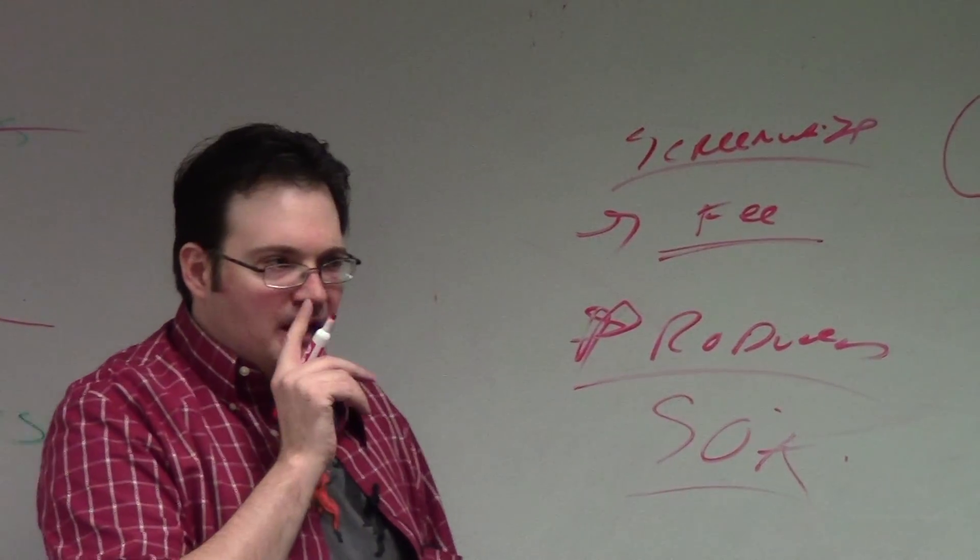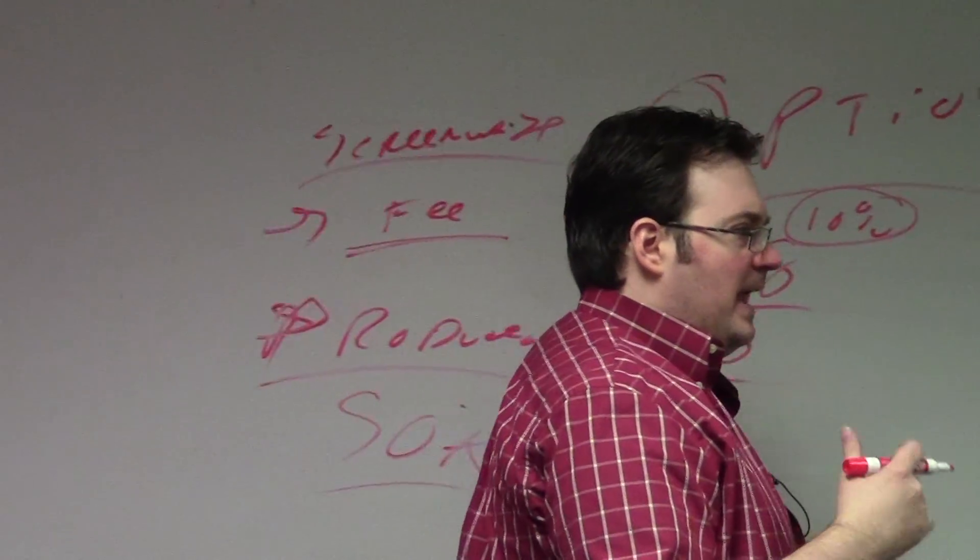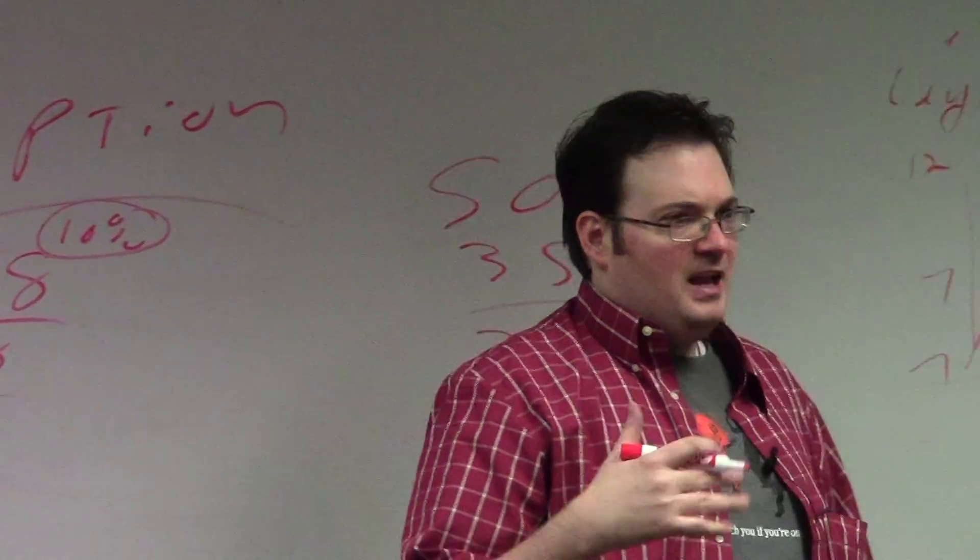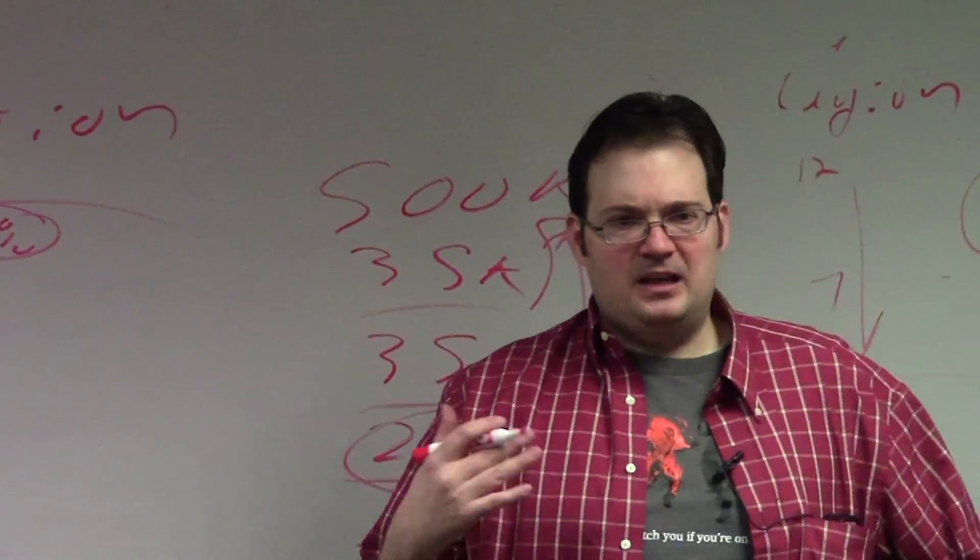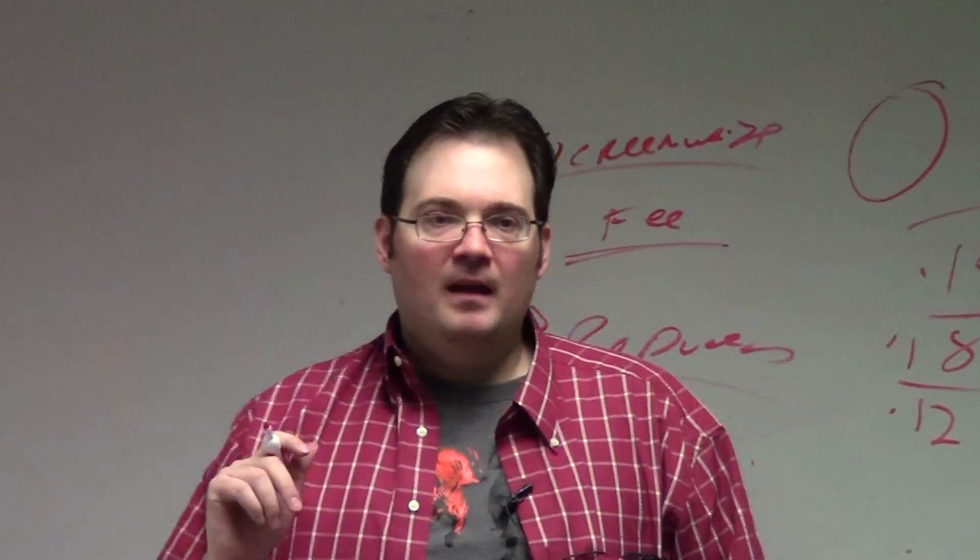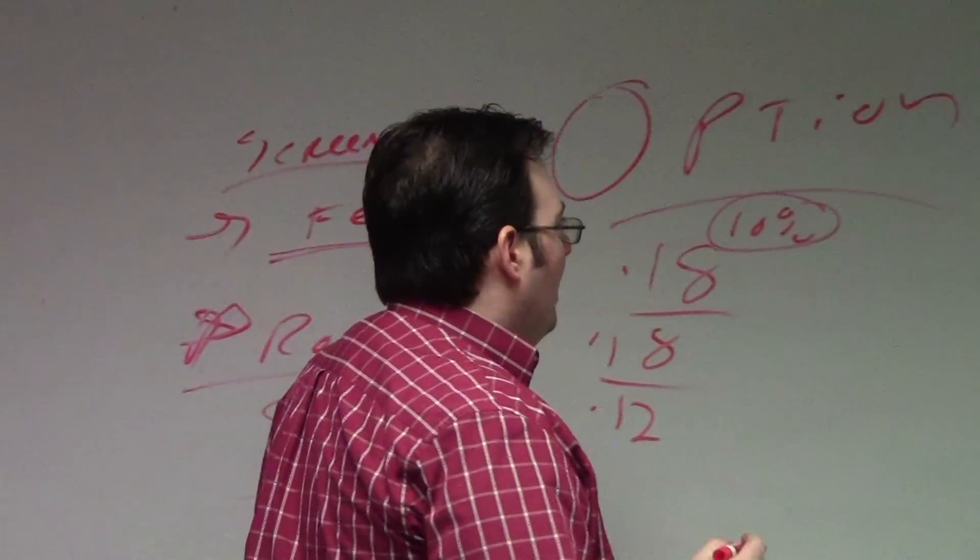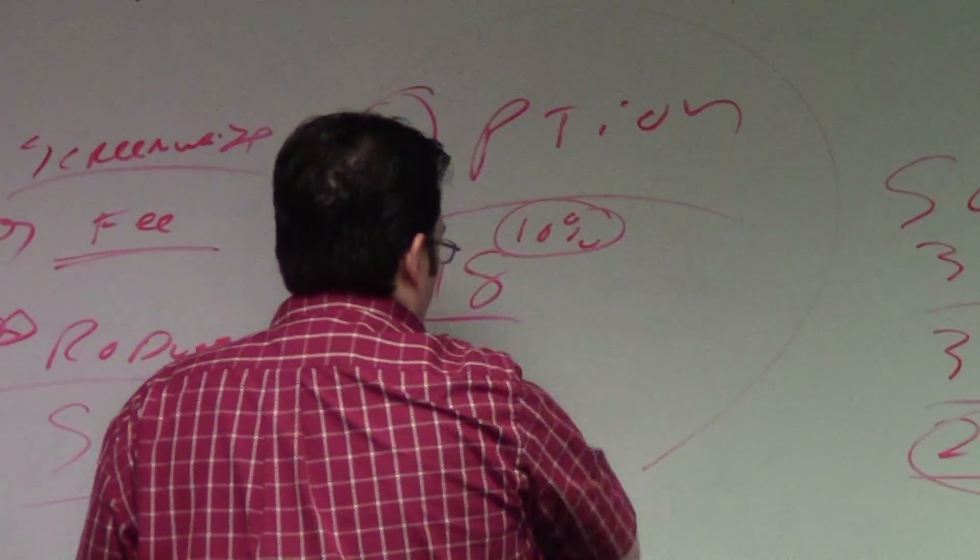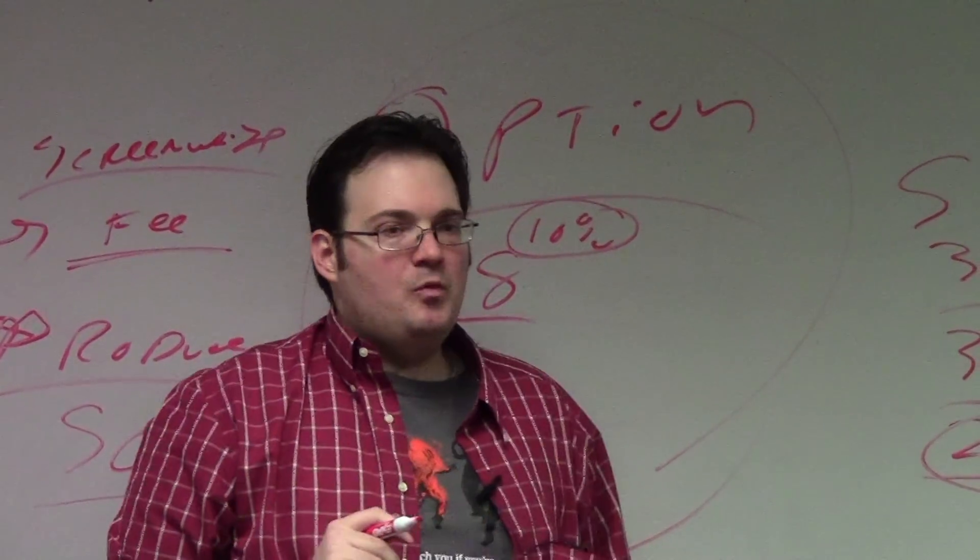The idea is they kind of own the rights, but they kind of don't. They're optioning them. You can't sell them to anyone else. They have this time to try and get things going and things like that. At the end of 18 months, they usually pay the same amount again. And then at the end of that 18 months, they usually pay a smaller amount for a smaller period.